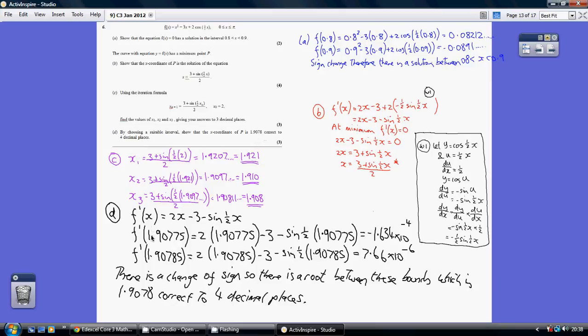Our lower bound is 1.90775, our upper bound is 1.90785. So we substitute both of these into the differential, and we get a very small negative number with the first, a very small positive number for the second, and there is a change of signs. There is a route between these bounds, which is 1.9078 correct to 4 decimal places.